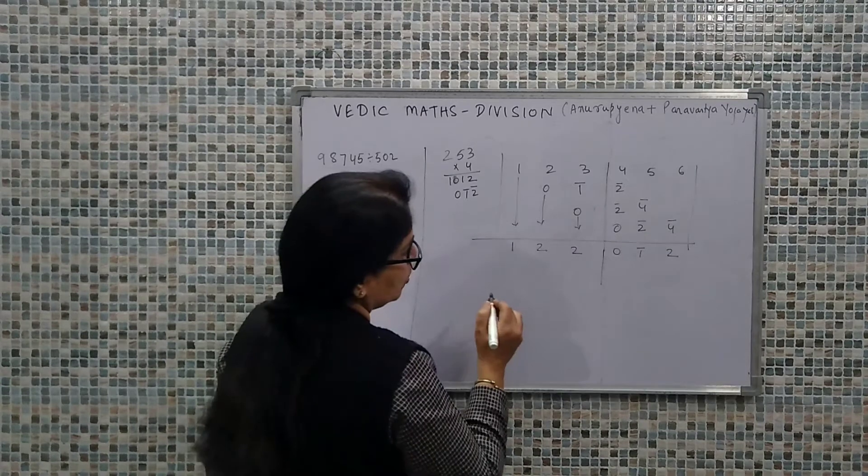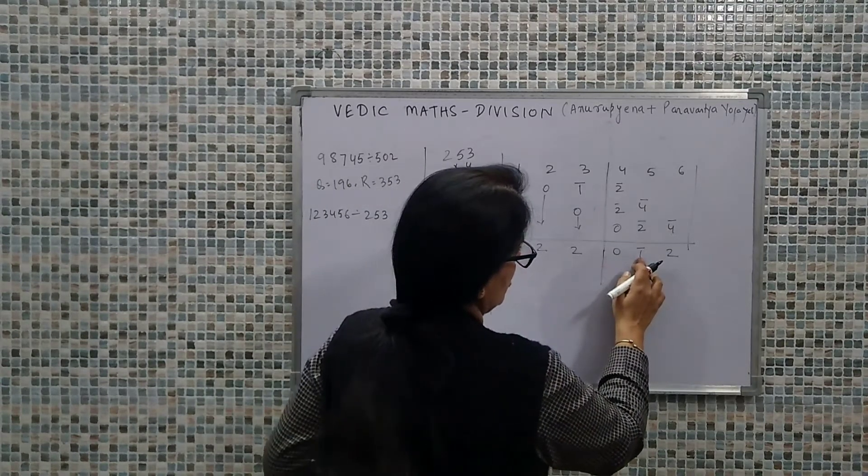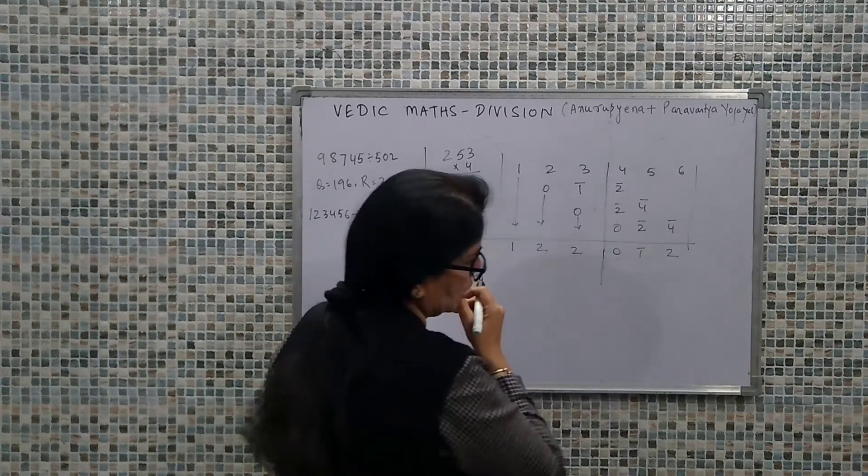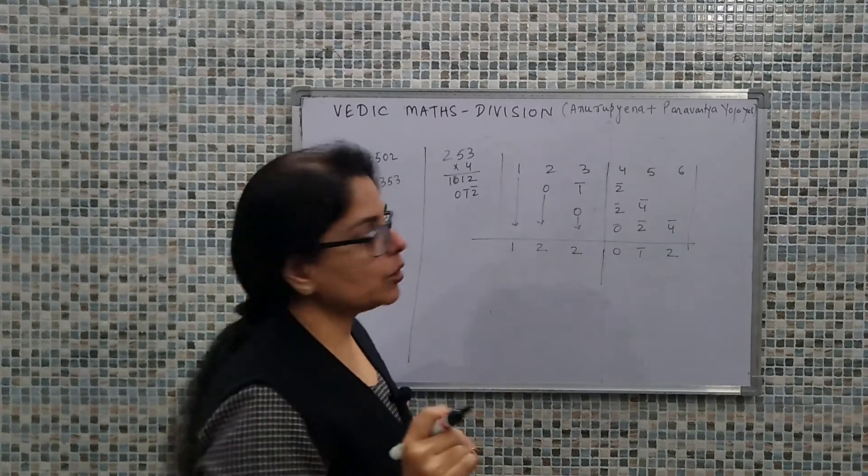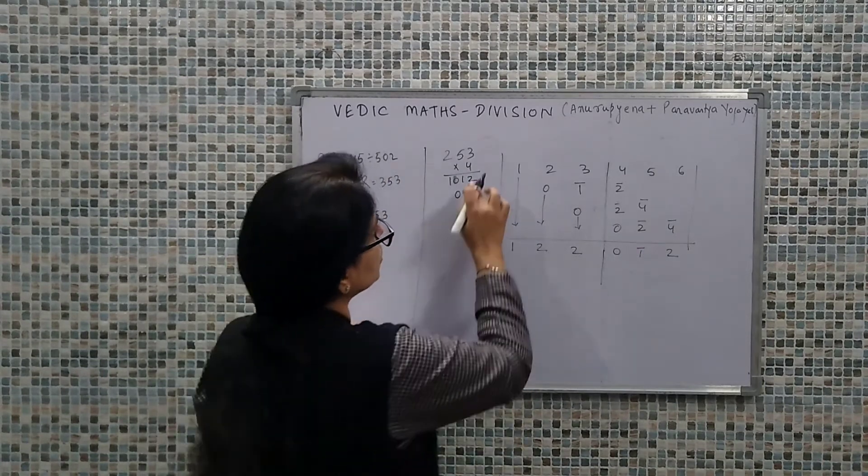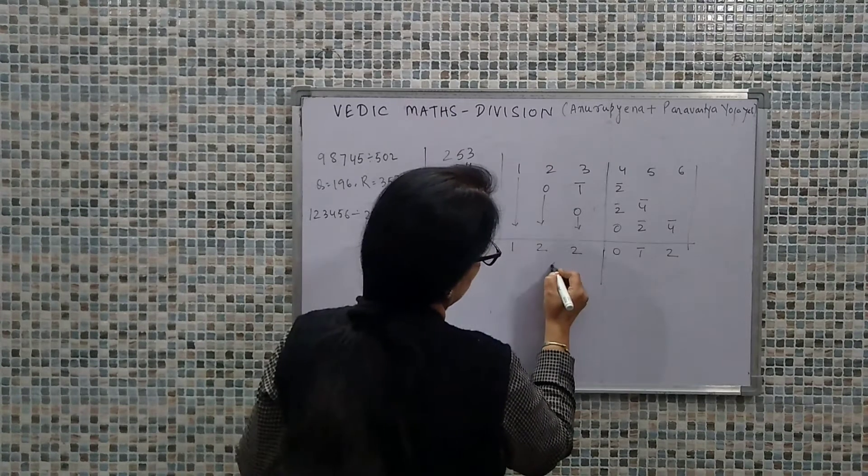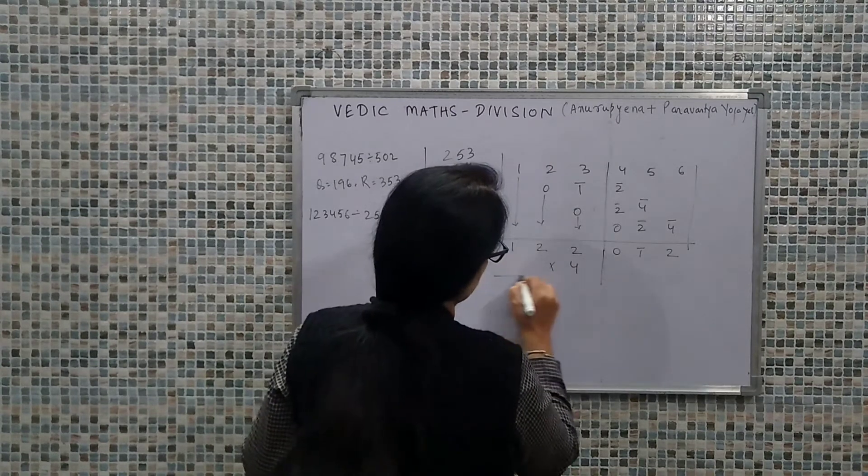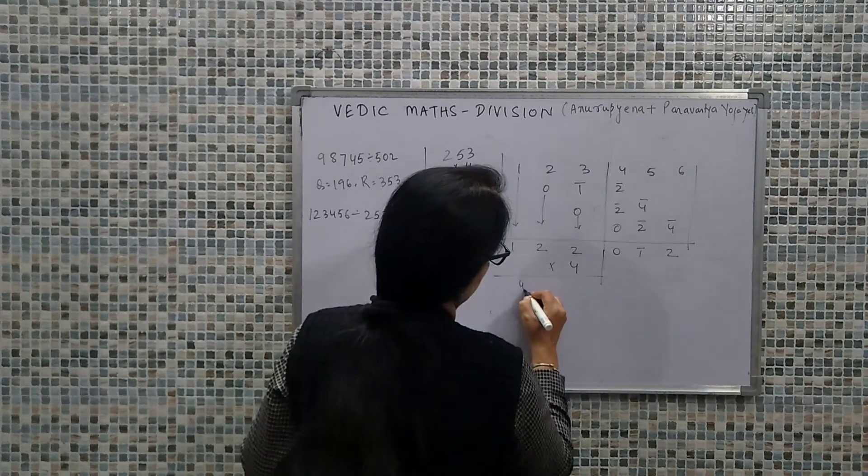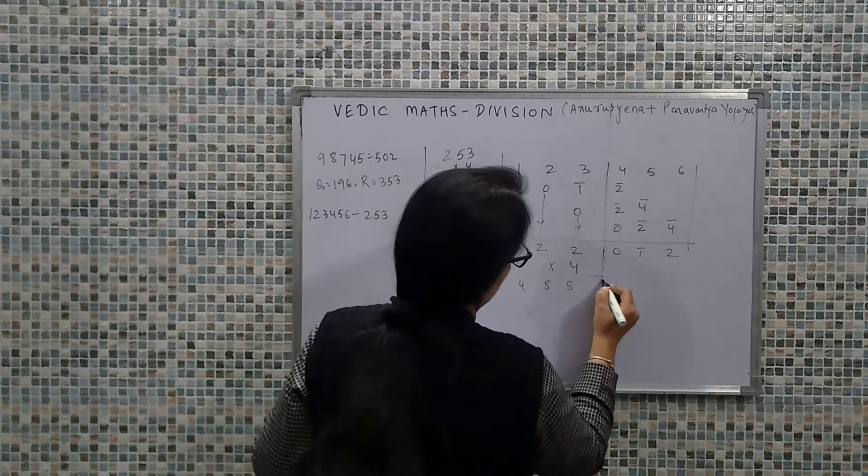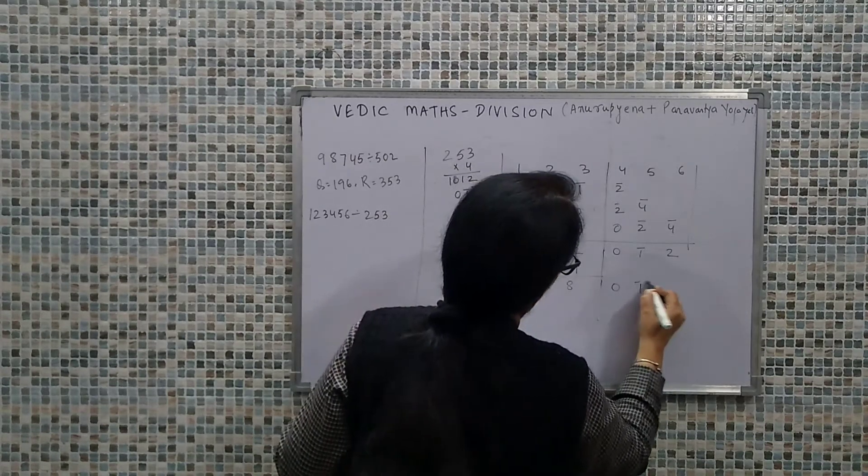Now where is our complication? This number is negative. We need to convert it to positive. To convert it to positive, first thing: our multiplying factor was 4. First I will multiply the quotient by 4. So it will be 488, 0, 1, 2.